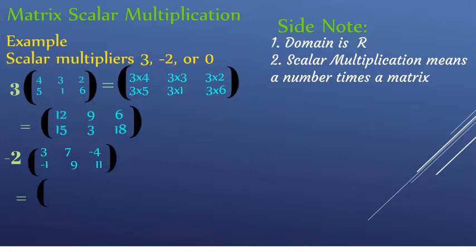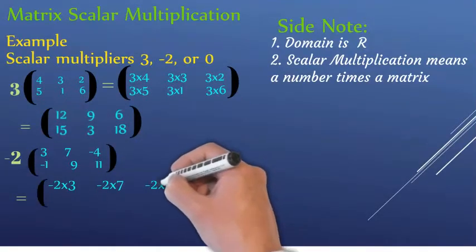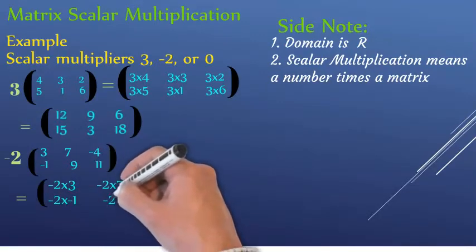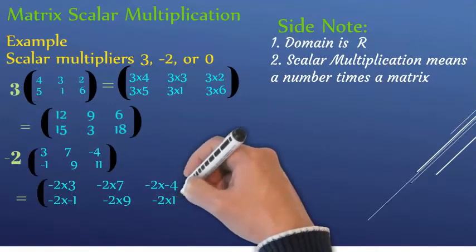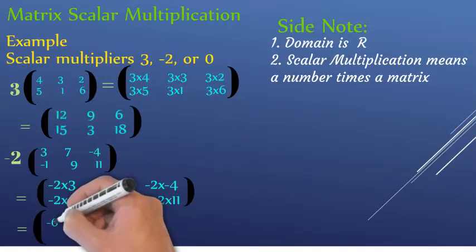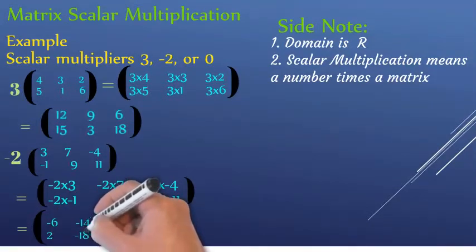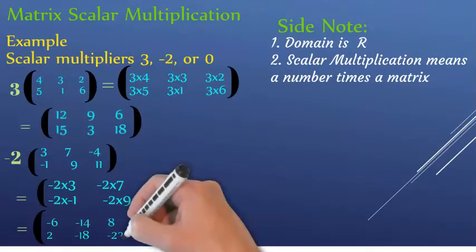For the scalar minus two: minus two times three, minus two times seven, minus two times minus four, minus two times minus one, minus two times nine, minus two times eleven. That gives us positive six, negative fourteen, positive eight, positive two, negative eighteen, and negative twenty-two.